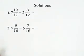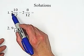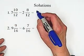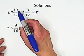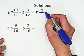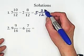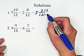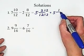Solutions. Subtract two mixed numbers. Subtract the whole number portion: 7 minus 2 equals 5. Subtract the numerators: 10 minus 8 equals 2 over 12. Keep denominator unchanged, and simplify: divide by 2. We got 5 and 1 over 6.